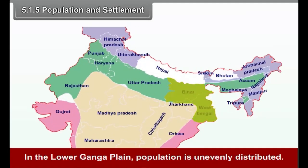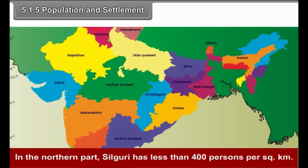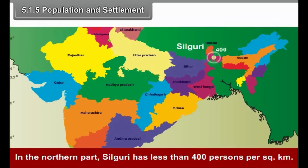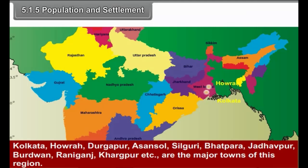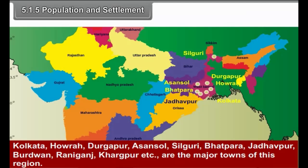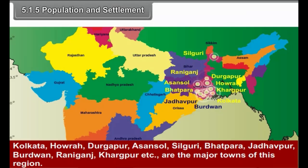In the lower Ganga Plain, population is unevenly distributed. In the northern part, Siliguri has less than 400 persons per square kilometer. Near Kolkata and Haora, population density is about 1000 persons per square kilometer. Kolkata, Haora, Durgapur, Asansol, Siliguri, Bhatpara, Jadavpur, Burdwan, Raniganj, Kharagpur, etc. are the major towns of this region.